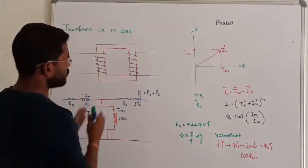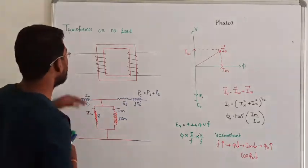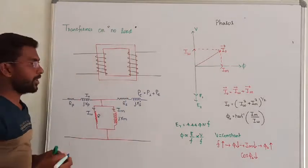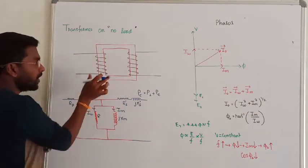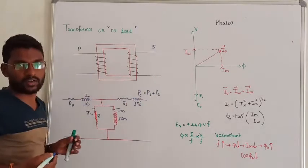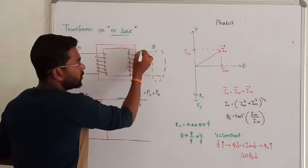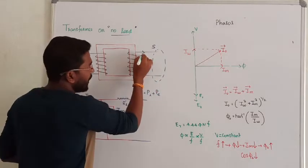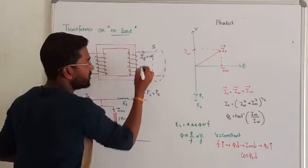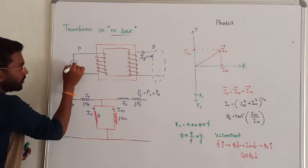Now let us see how the transformer will react under no load. There is no load connected, but we are giving some supply. The transformer has two sides: primary side and secondary side. At the secondary side there is no load, so this line is called open circuit, and the current delivered at the secondary side is going to be 0 ampere.